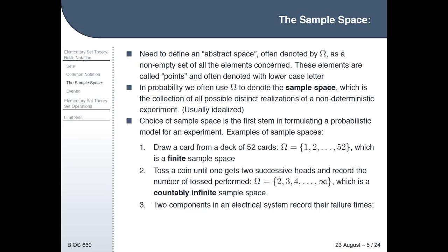Another example of a sample space: say there are two components in an electrical system and you record how long until they fail. That would be two real numbers, both of which have to be greater than zero. In theory the time could be any real number between zero and infinity. In practice we can't measure failure time with infinite precision, but when something is reasonably close to being continuous, we like to just pretend that it's continuous because you can find some nice mathematical properties that let us do cool things statistically.